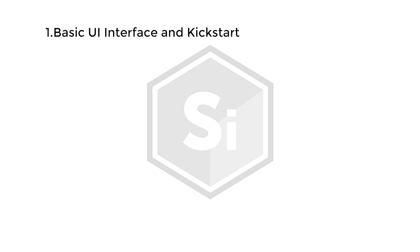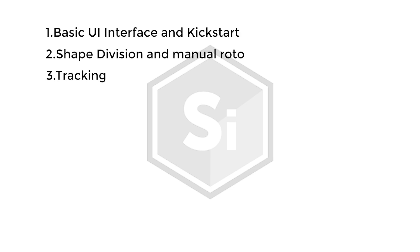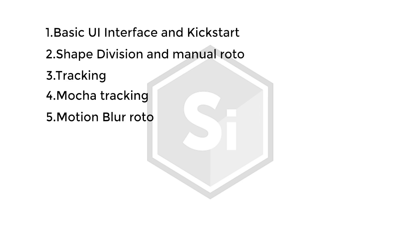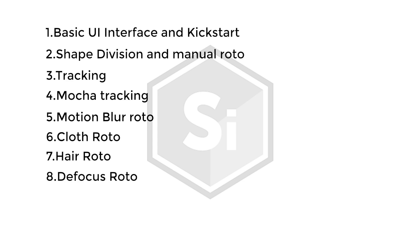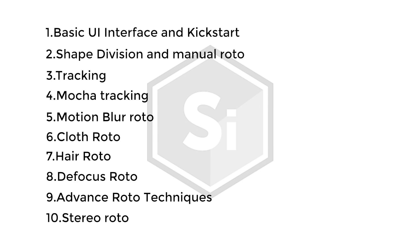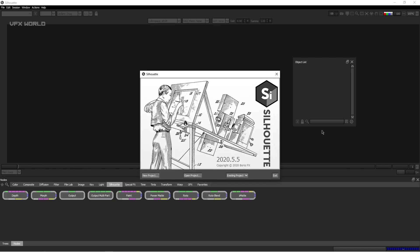The first class covers basic UI interface and kickstart. The second is shape division and manual roto. Third is tracking. Fourth is completely dedicated to mocha tracking. Fifth is motion blur roto. Sixth is cloth roto. Seventh is hair roto. Eighth is defocus roto. Ninth is advanced rotoscoping techniques. Tenth and last is stereo roto. These are the 10 important classes in this masterclass.